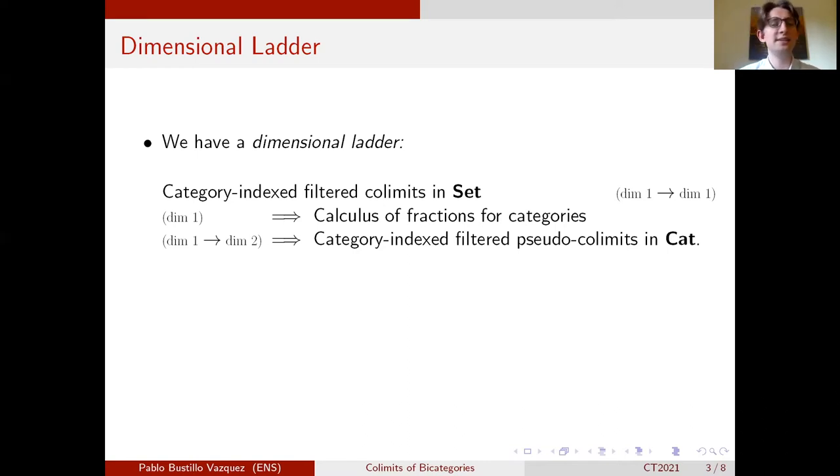And what SGA says is that if you can compute the calculus of fraction of categories, then you can compute category-indexed filtered pseudocolimits in cats. Well the first thing we do in the paper is to slightly generalize this result by SGA. So actually only using calculus of fraction of categories, you can compute bicategory-indexed filtered pseudocolimits in cats.